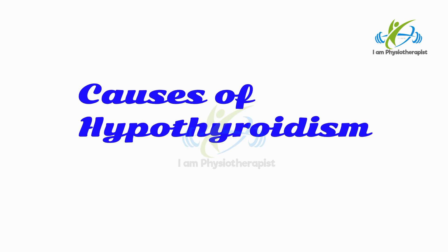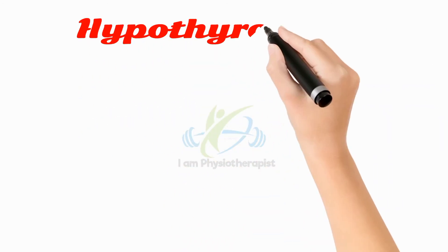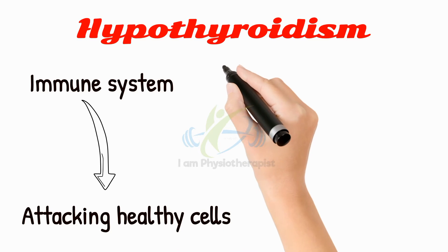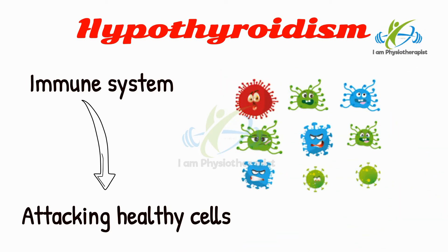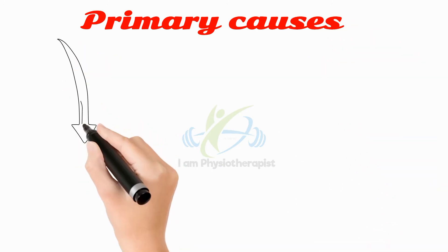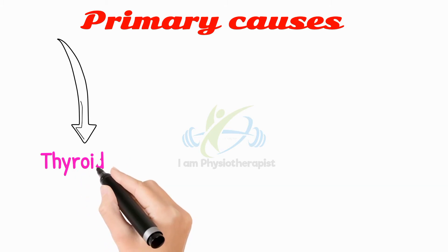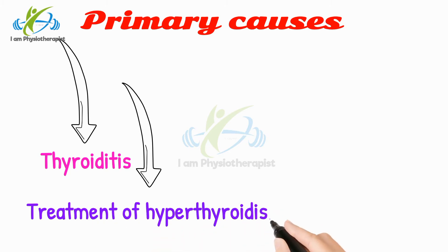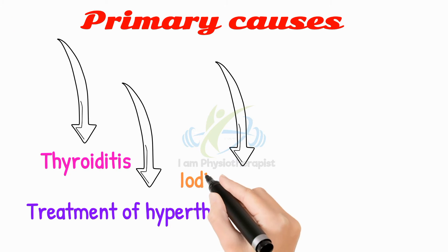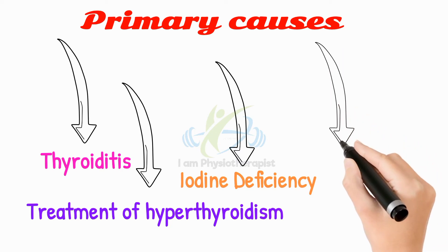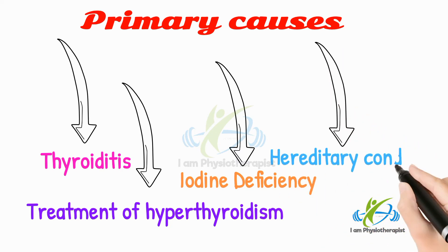Most cases of an underactive thyroid are caused by the immune system attacking and damaging the thyroid gland, or by damage from treatments for thyroid cancer or an overactive thyroid. Primary causes include thyroiditis — inflammation of the thyroid — radiation or surgical removal of the thyroid, iodine deficiency, and hereditary conditions.